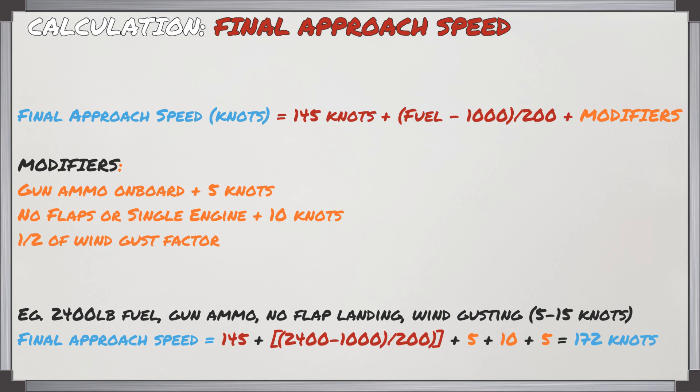In the example, if you had 2,400 pounds of fuel with gun ammunition, a no-flap landing, and the wind gusting between 5 and 15 knots, that gives you a final approach speed of 172 knots. It's important to note that everything is constant except for the fuel, so as the fuel changes, the weight changes, and that's going to change your final approach speed as a result.